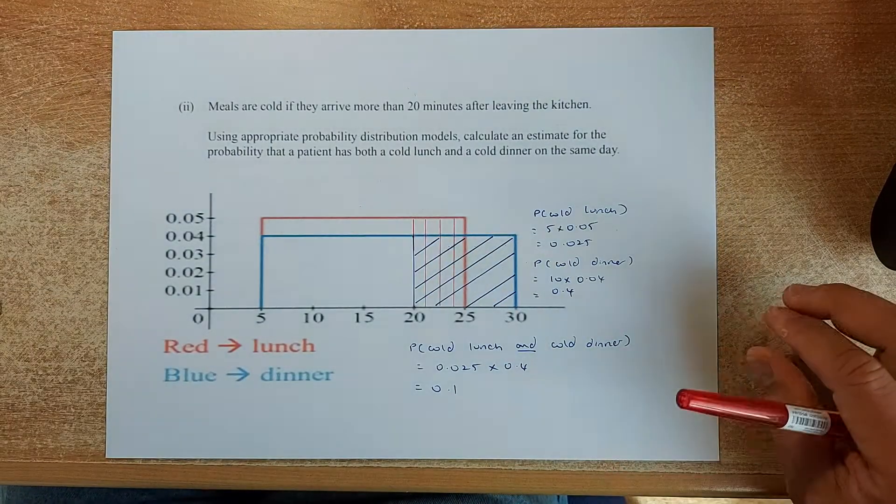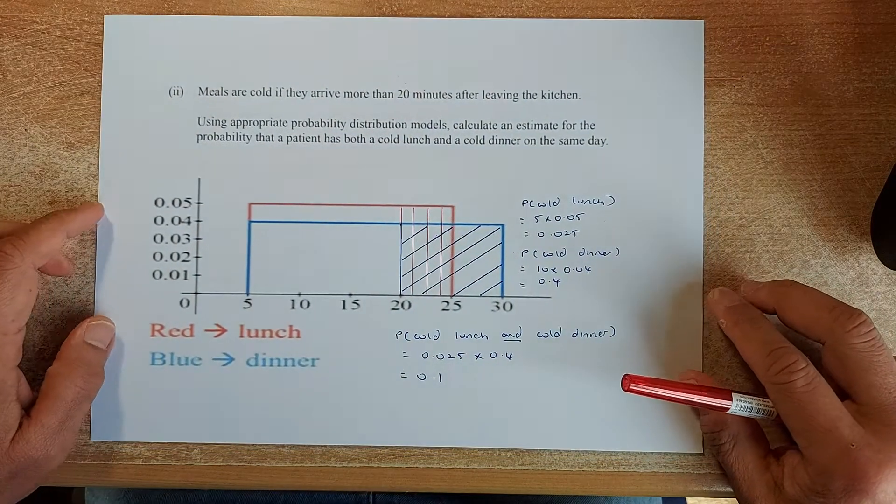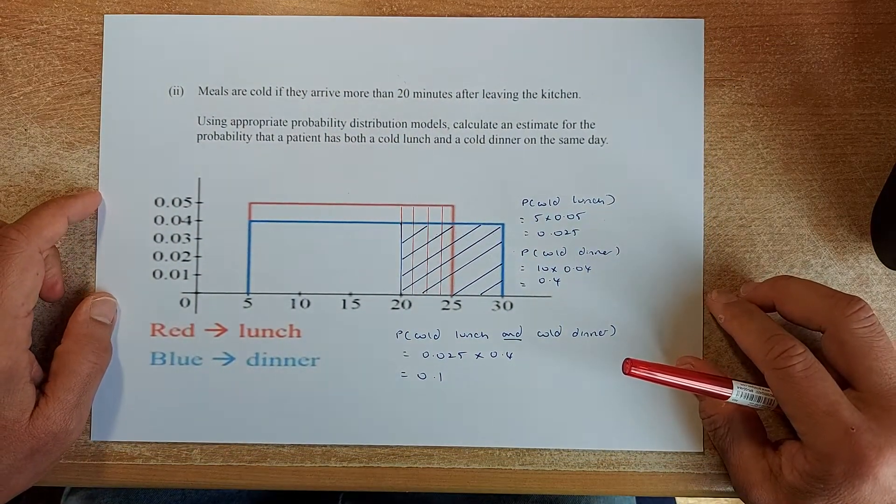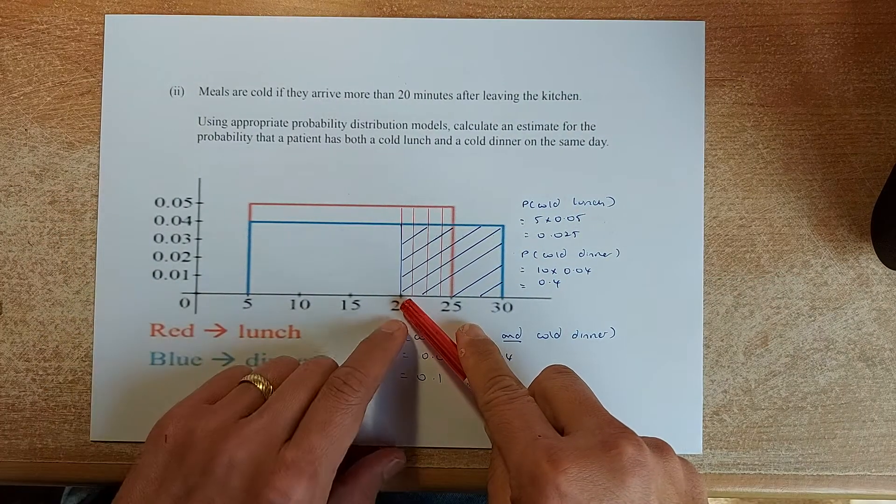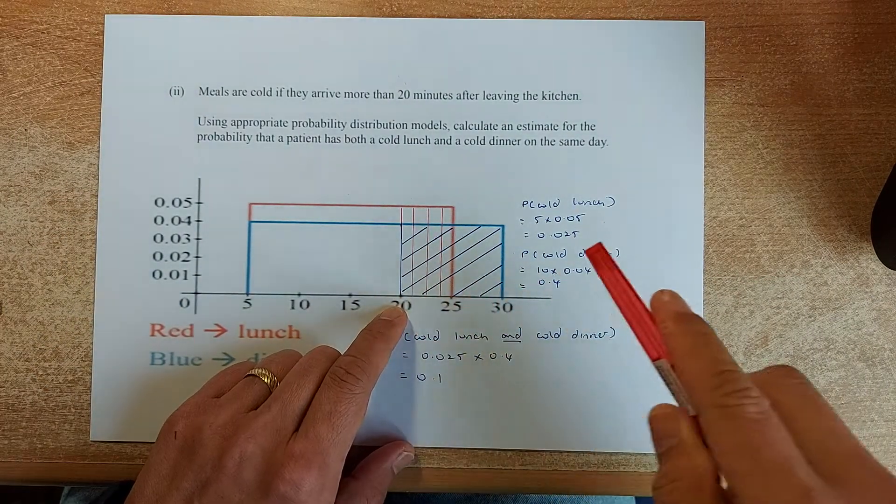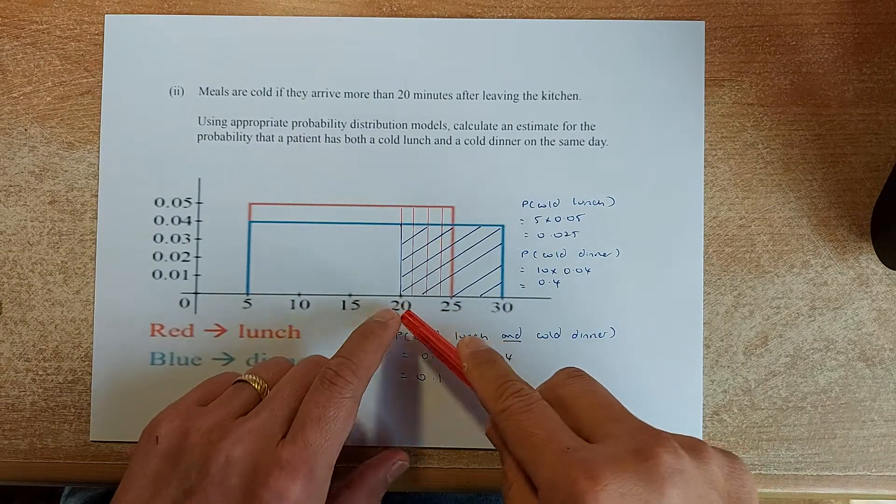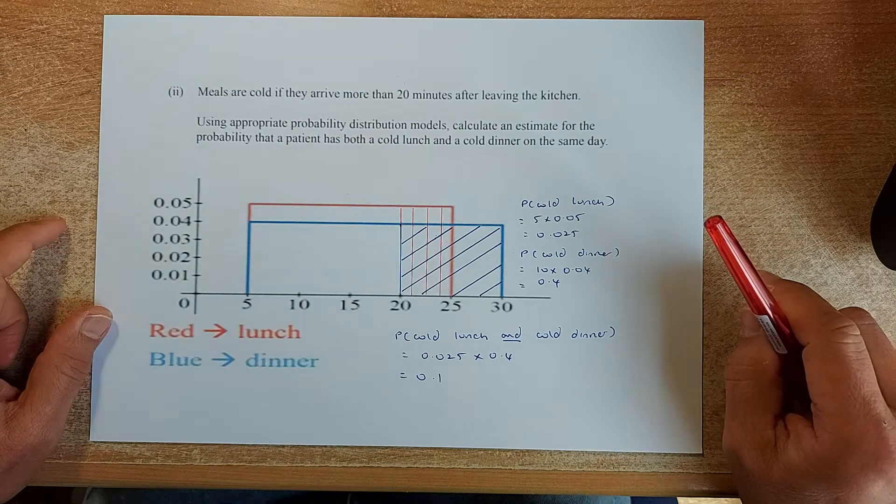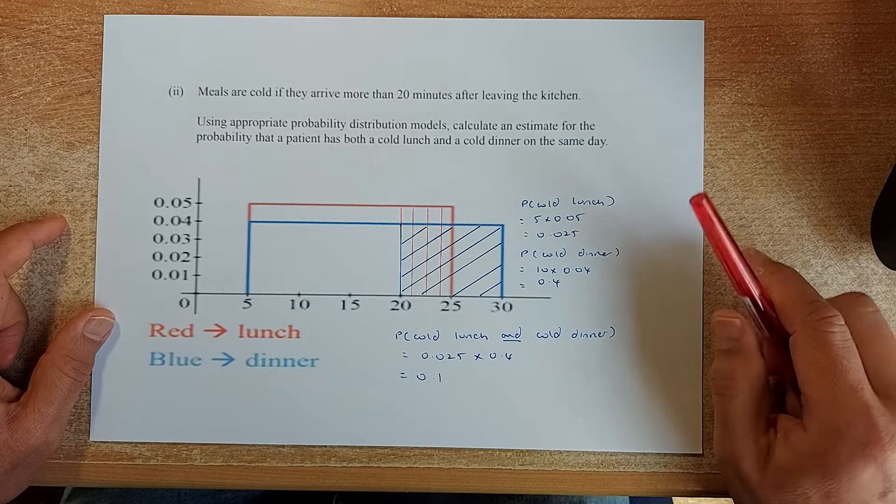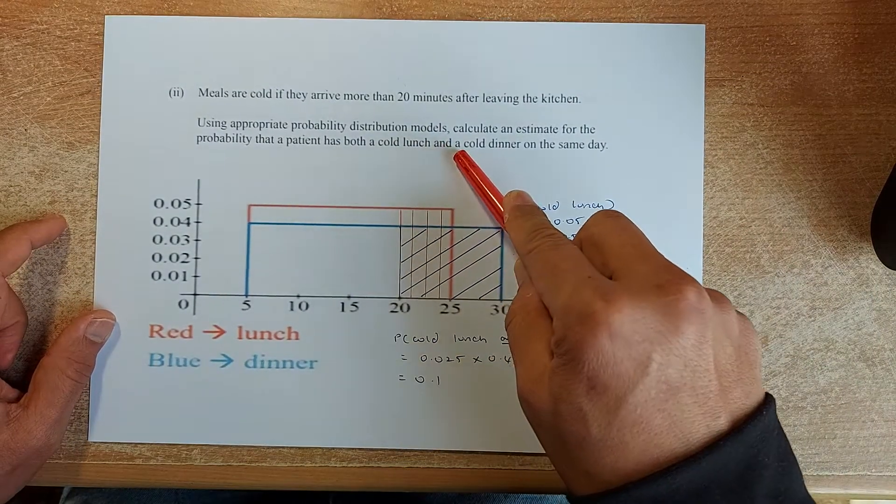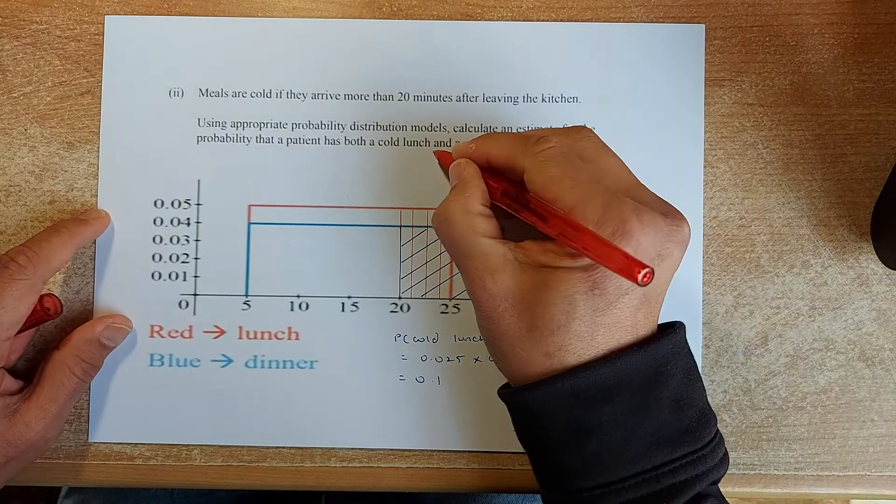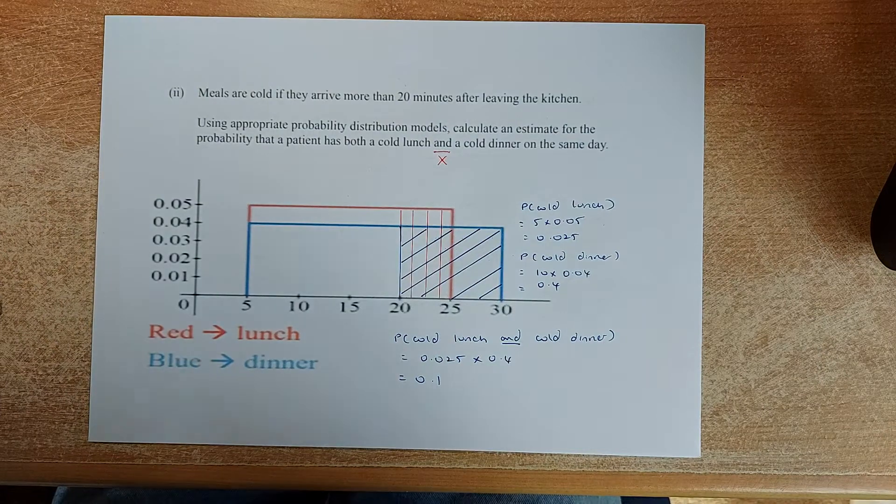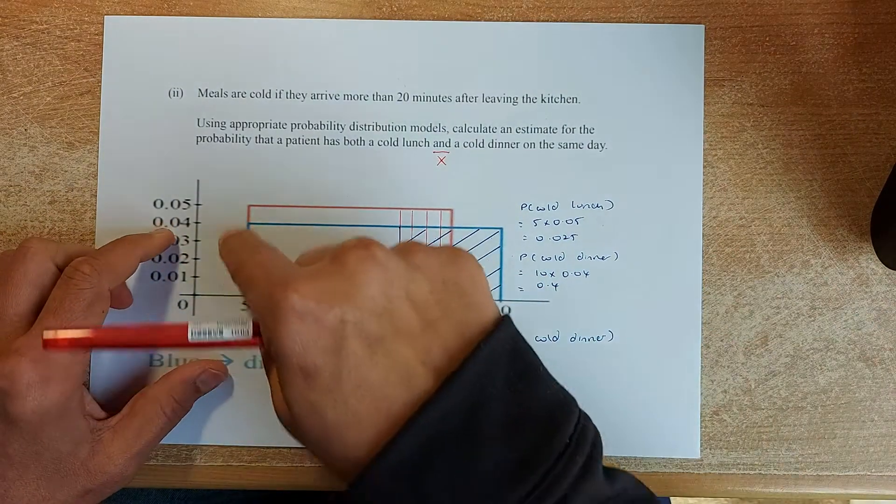Question 2 of part A. Meals are cold if they arrive more than 20 minutes after leaving the kitchen. So 20 minutes for lunch is 20 to 25. For dinner is 20 to 30. Use the appropriate probability distribution. Calculate the estimate for probability that a patient has both a cold lunch as well as a cold dinner. The word AND in mathematics or in statistics is multiplied. So we calculate the probability of a cold lunch, the red box.